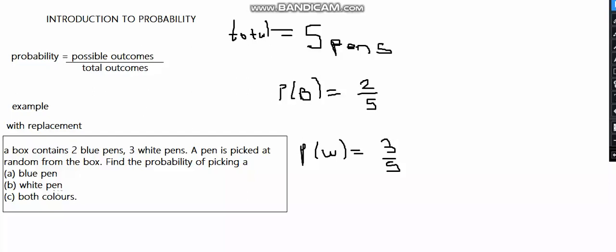For part C, both colors - in probability, 'both' means multiplication. When you say both colors, we mean the probability of blue AND the probability of white. Probability of blue is 2/5, and probability of white is 3/5. Two times three gives 6, and 5 times 5 gives 25, so we get 6/25. This is the probability of blue and white at the same time.